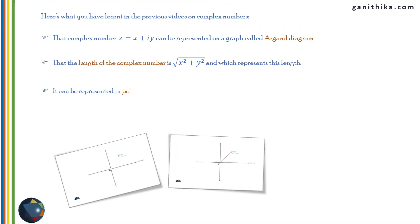The next concept you should know is the polar form of a complex number. x + iy is the Cartesian form, whereas r(cosθ + i sinθ) is the polar form. You should know how to convert between them. Here, r is called the modulus, which equals √(x² + y²), and θ is called the argument, which equals tan⁻¹(y/x). These things you must have learned in the first four videos.